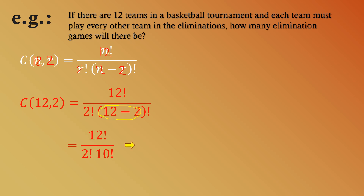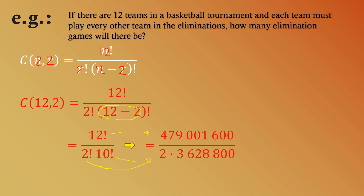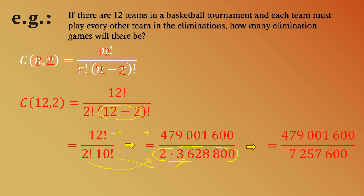Simplifying the factorials: 12! equals 479,001,600; 2! equals 2; and 10! equals 3,628,800. Multiplying the denominator: 2 times 3,628,800 equals 7,257,600. Dividing 479,001,600 by 7,257,600 gives us 66. Therefore, there are 66 elimination games that can be made from these 12 teams.